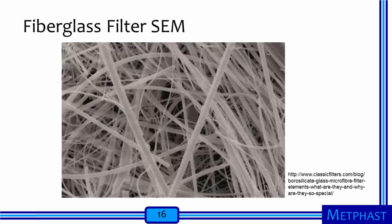This is a scanning electron micrograph of a fiberglass filter. We get a sense for the depth of the filter. We also see that the fibers are nonwoven — they are random in their orientation in at least two dimensions. The fibers have a range of diameters. Manufacturers of certain types of filters will include fibers of many diameters to provide optimal collection of different sized particles.